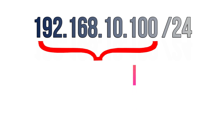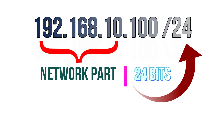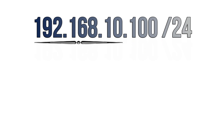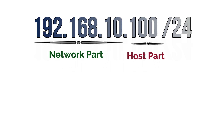For example, let's consider this IP address: 192.168.10.100/24. As you might guess, this is a Class C IP address. These IP addresses have 24 bits that belong to the network part and 8 bits that belong to the host part. This means that 192.168.10 will be the network part, and 100 will be the host part.